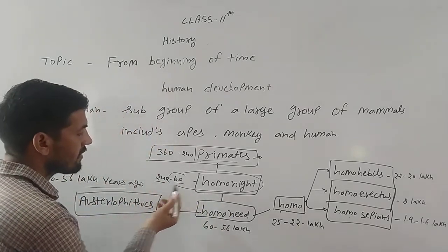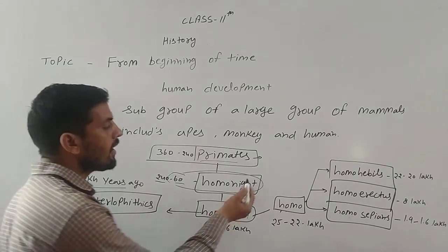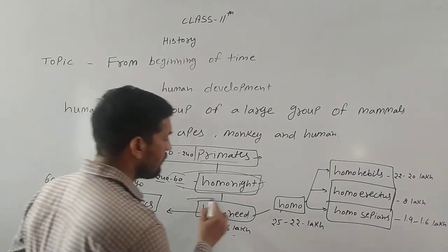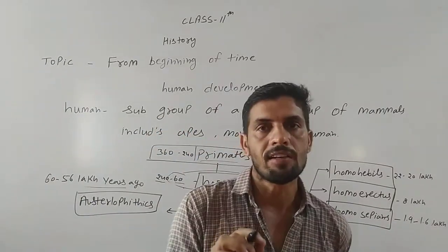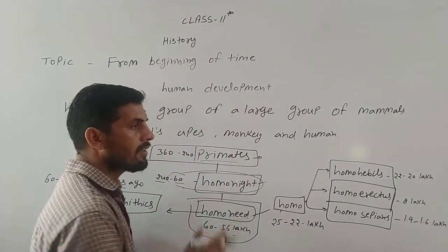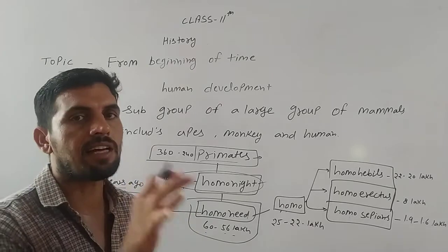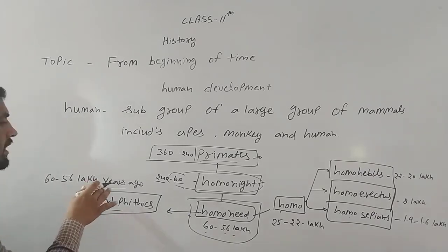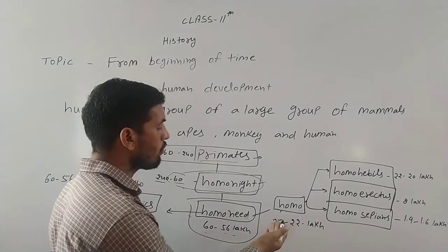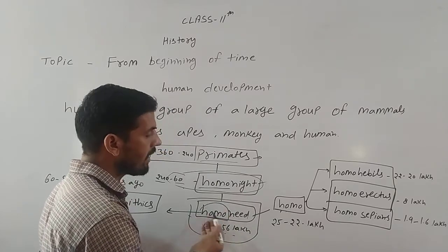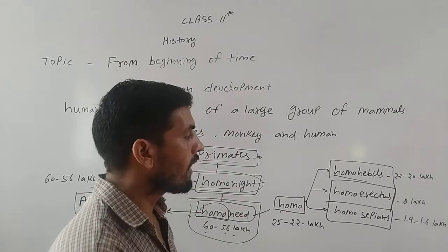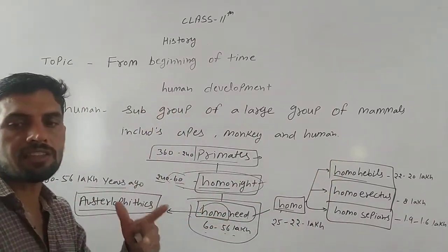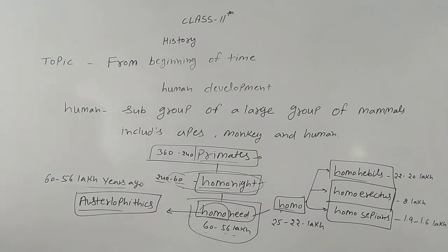होमोनाइड लगभग 24 लाख साल पहले आए, इनकी category रखी गई। इस समय तक मानव वानर रूप में था। होमोनीड जो था वह 7 से 56 लाख साल तक माना जाता है — यह एकदम confirmed है। इससे पहले की जो तारीखें हैं वो confirm नहीं हैं, सिर्फ approximate मानी जाती हैं। कार्बन डेटिंग से पता चल सकता है कि यह इतने साल पहले का skeleton है। होमोनीड को दो भागों में बांटा गया — Australopithecus, जो 7 से 56 लाख साल पहले का है, और Homo।